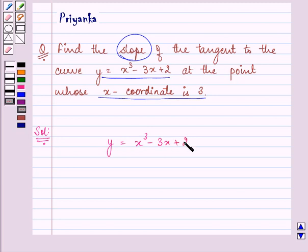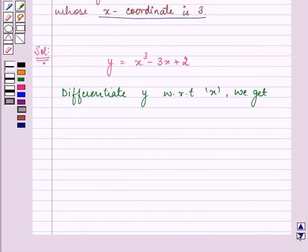We know that to find out the slope we need to differentiate the equation of this curve, that is y, with respect to x. On doing so we get dy/dx equals 3x squared minus 3.